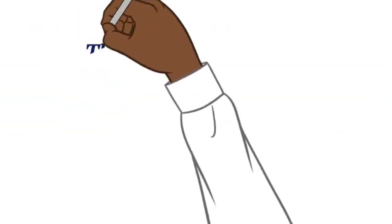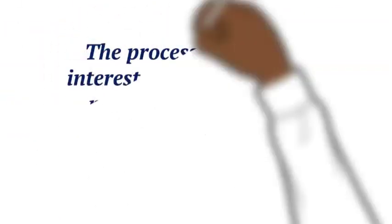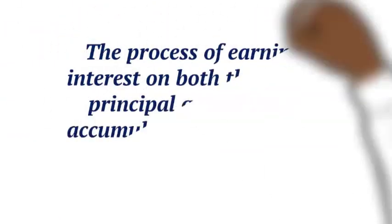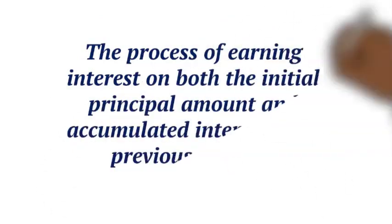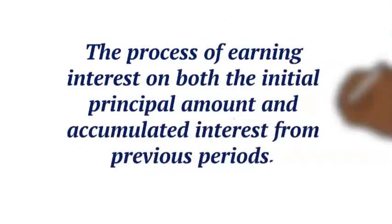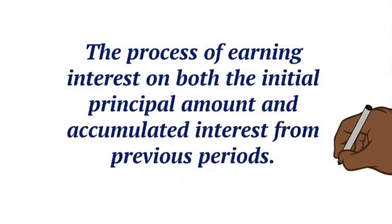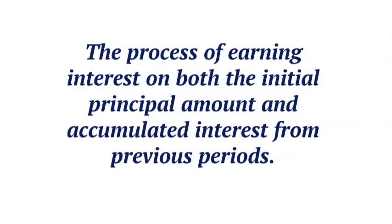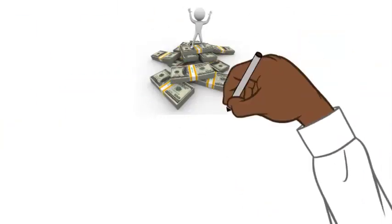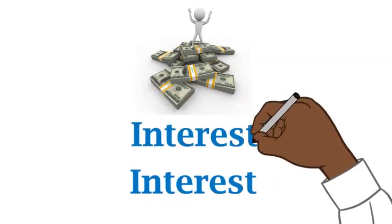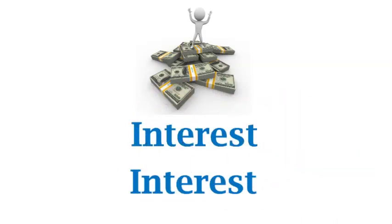The actual definition of compounding interest is the process of earning interest on both the initial principal amount and the accumulated interest from previous periods. In simple terms, it's interest on top of interest.